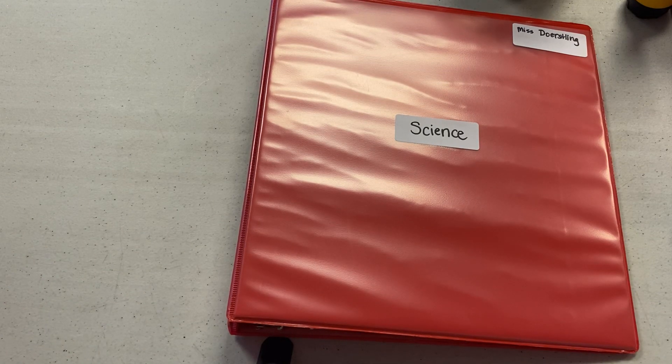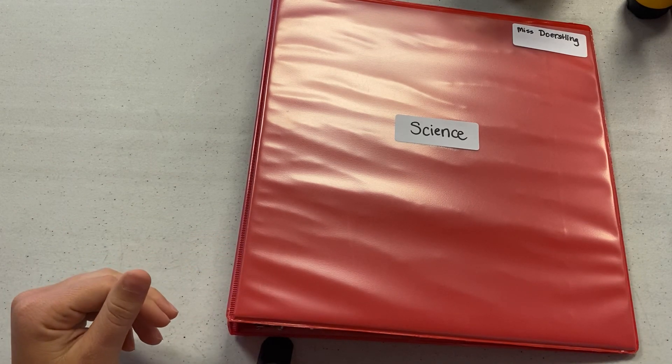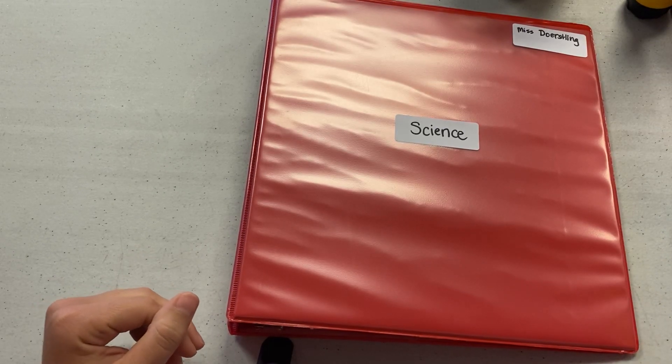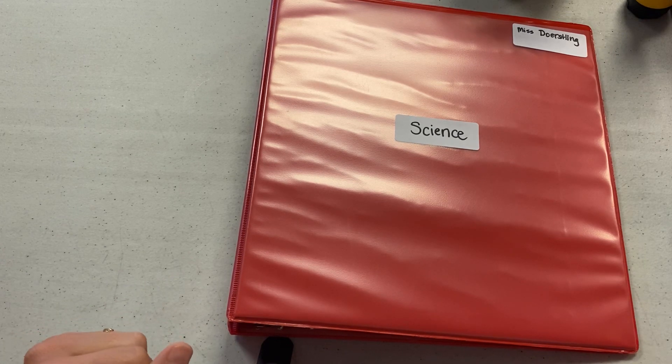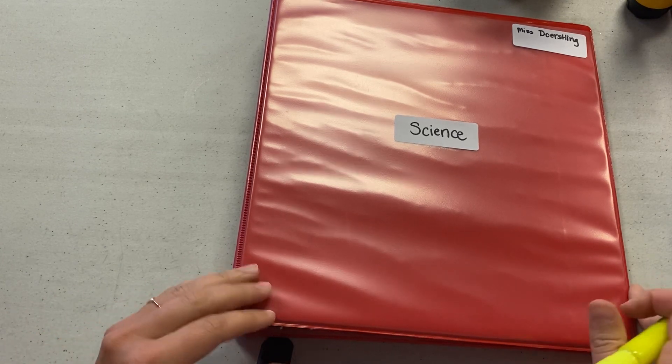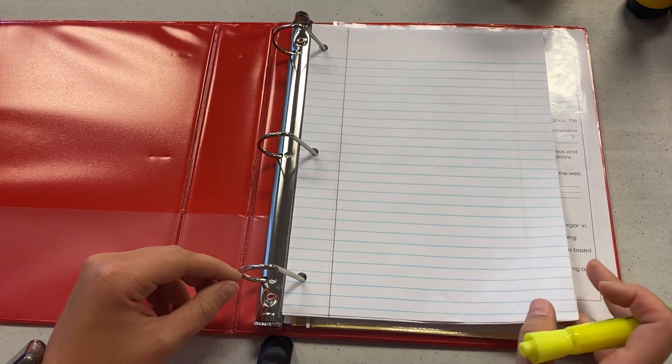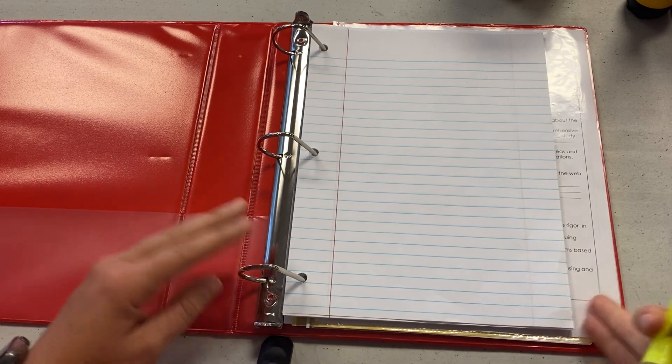All right, we're going to have our first science quiz coming up on Monday, so I want to show you how we're going to go through and highlight our notes. We won't do this every time. Typically in science, our quizzes are more vocab-based, so we'll have some sort of notes that go over new vocab for that unit, but for this one, we're just going to use the notes we've already taken and highlight some of those things to study for the quiz.